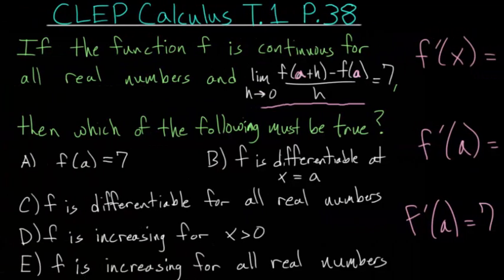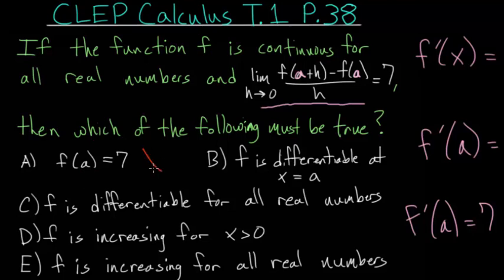Looking at letter A: f of a is equal to 7. Must that be true? The only thing we know is that the derivative at a is equal to 7, but we don't know what the function value at a is equal to. So we just don't have enough information to conclude if this is true or not.